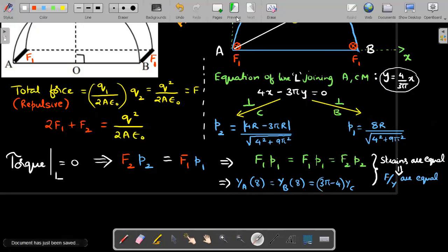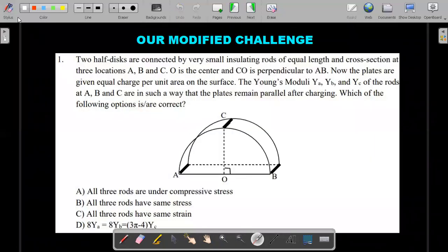So which means you go back to the options in the question. We have almost found the answer. All three rods are under compressive stress, the answer is no, it is actually in tensile stress. All three rods have same stress, no, forces are different, areas are same, so stress are different magnitudes. All three rods have same strain, yes, to stay parallel they should. And the last relation is something that we found out after using coordinate geometry. So the answers are C and D.